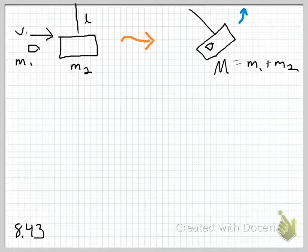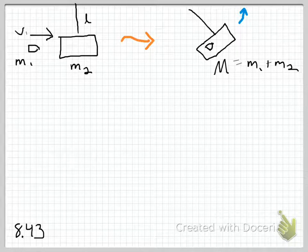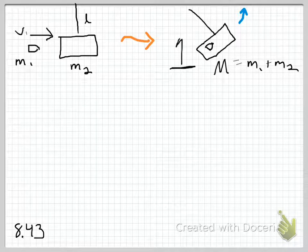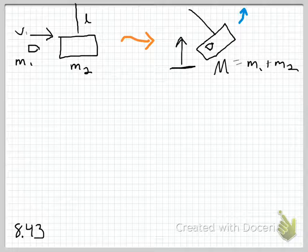When the bullet strikes the pendulum, it embeds itself within it, and of course the pendulum starts to swing. Part A asks you to calculate the vertical height through which the pendulum rises. In other words, if this is the initial level, the final vertical position will be at some height H.